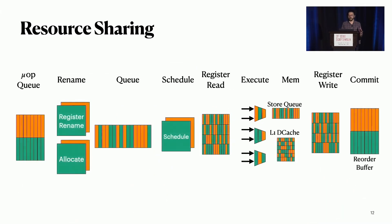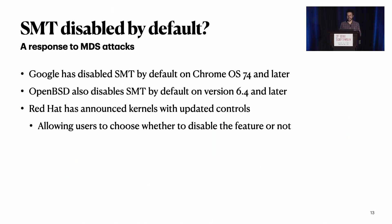A floating point functional unit was just one example. With SMT, almost every part of the pipeline is shared between the threads, which creates a huge problem for security. This has put SMT at high risk of being turned off in the name of security. OpenBSD and Red Hat have both introduced new ways to disable this feature in their future kernels.